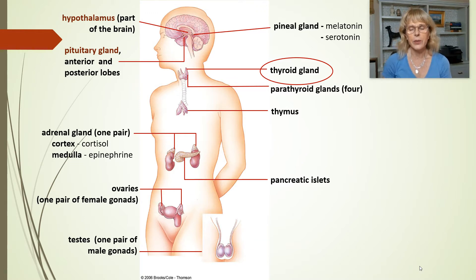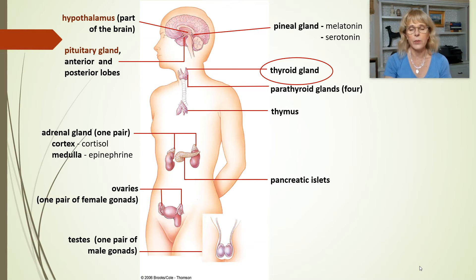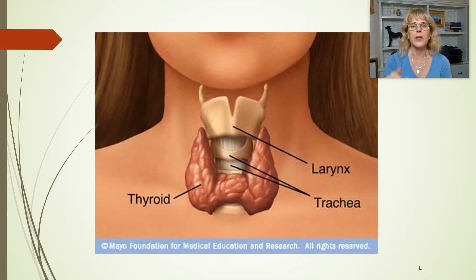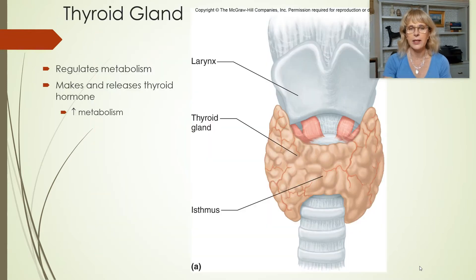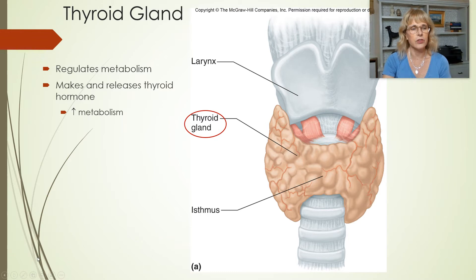The thyroid gland creates two hormones. One of them is thyroid hormone. The thyroid gland is kind of shaped like a butterfly — it's got two lobes — and it makes and releases thyroid hormone.